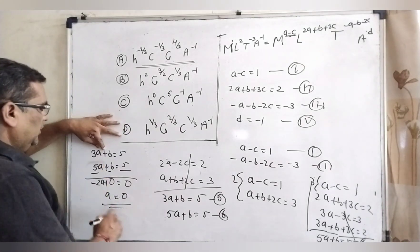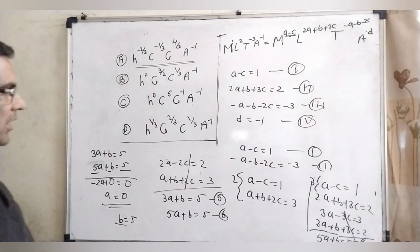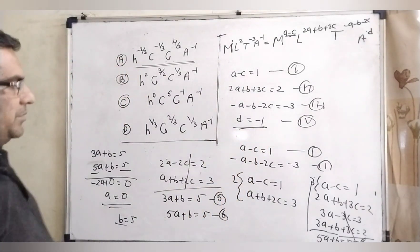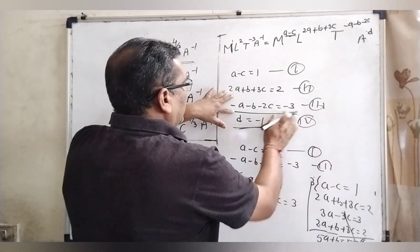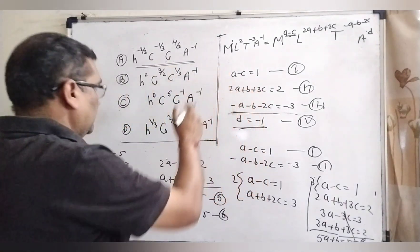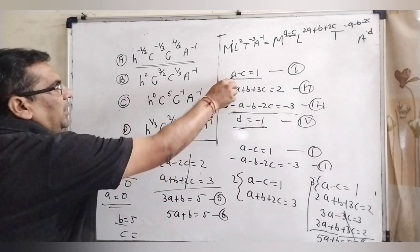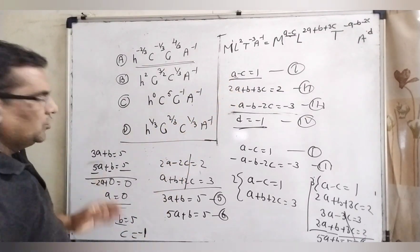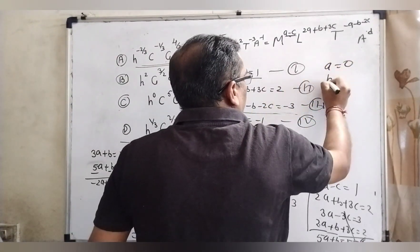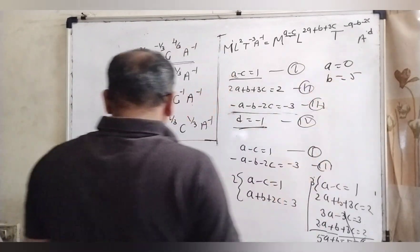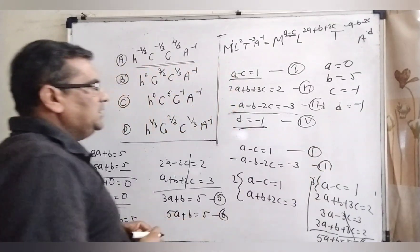Substituting a = 0 into equation 5 gives b = 5. Substituting a = 0 into equation 1: 0 − c = 1, so c = −1. And d = −1 was already found. So we have: a = 0, b = 5, c = −1, d = −1.